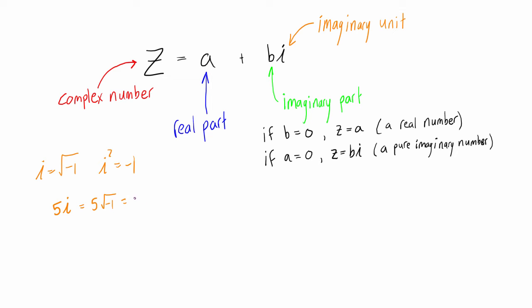We could also say that this is the same thing as the square root of 25 times the square root of negative 1, and then we can combine those to say that this is the square root of negative 25. So if you see a value like this in a problem, you know we're dealing with pure imaginary numbers or more generally complex numbers.